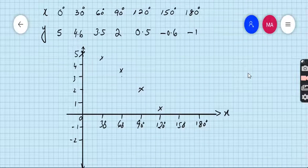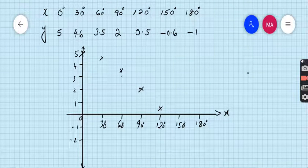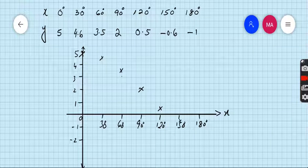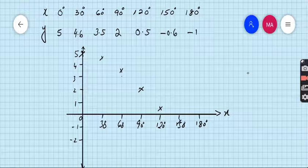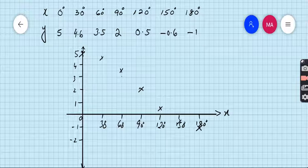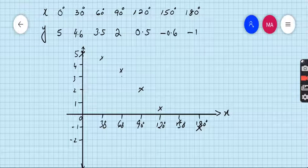For 60, 3.5. For 90, the value is 2. For 120, the value is 0.5. For 150, the value is minus 0.6. This should be just below this square. For 180, the value is minus 1. Now join all these points to get the required graph.